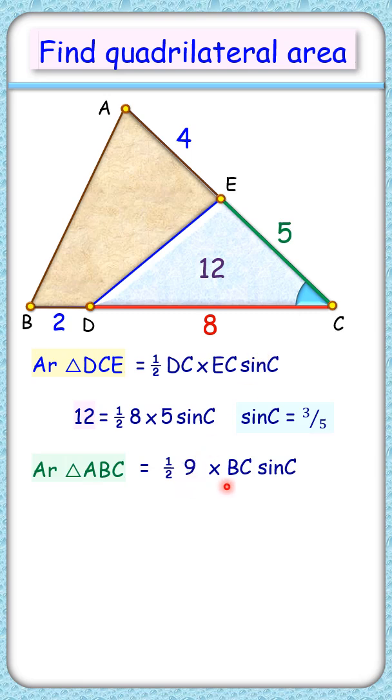Putting AC as 9, BC as 10, and sin C as 3 by 5, solving it to get area of triangle as 27 centimeters squared. So full area is 27 centimeters squared, so area of this quadrilateral will be 15 centimeters squared, and that's our answer.